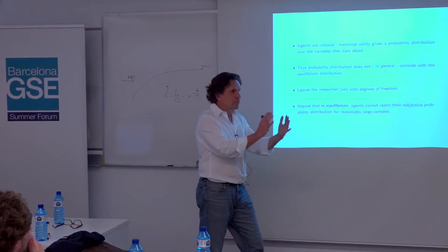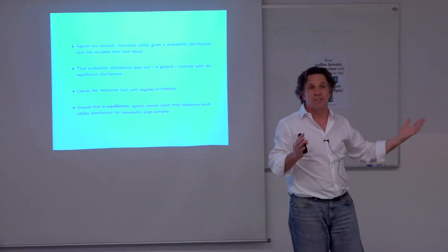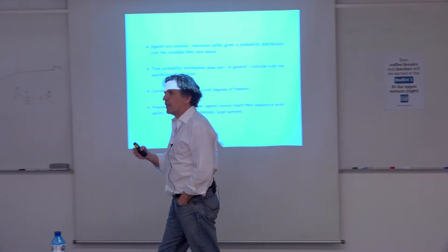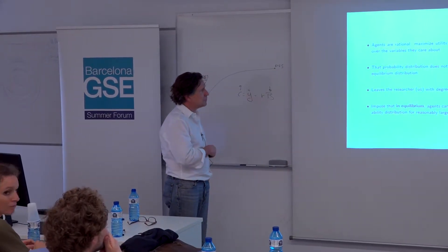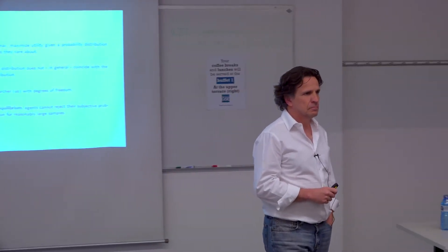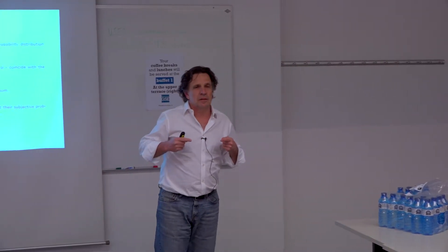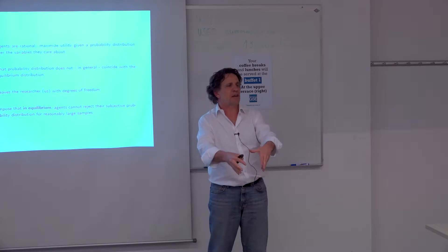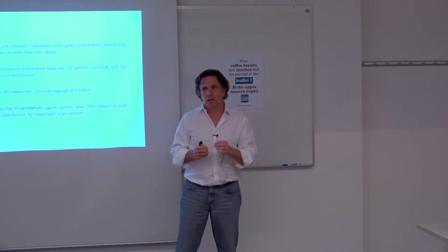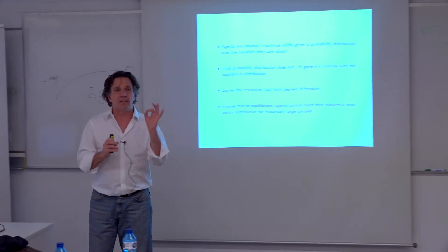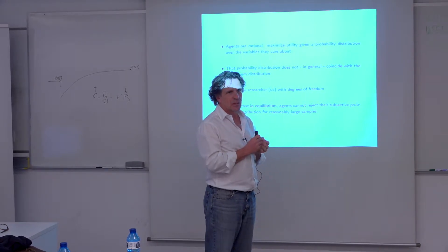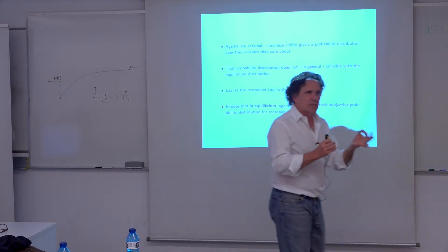So instead of using the exact fixed point, we're going to use a distribution which will affect the equilibrium, but that distribution is not going to differ that much from the true distribution of the variable. I'm going to have one free parameter only, and if I set that free parameter to zero, I get exactly rational expectations. Then I'm going to tell you what happens if I get that parameter to be slightly different from zero, and that parameter will have an economic interpretation in terms of a signal extraction problem the agents are going to be solving optimally in equilibrium.